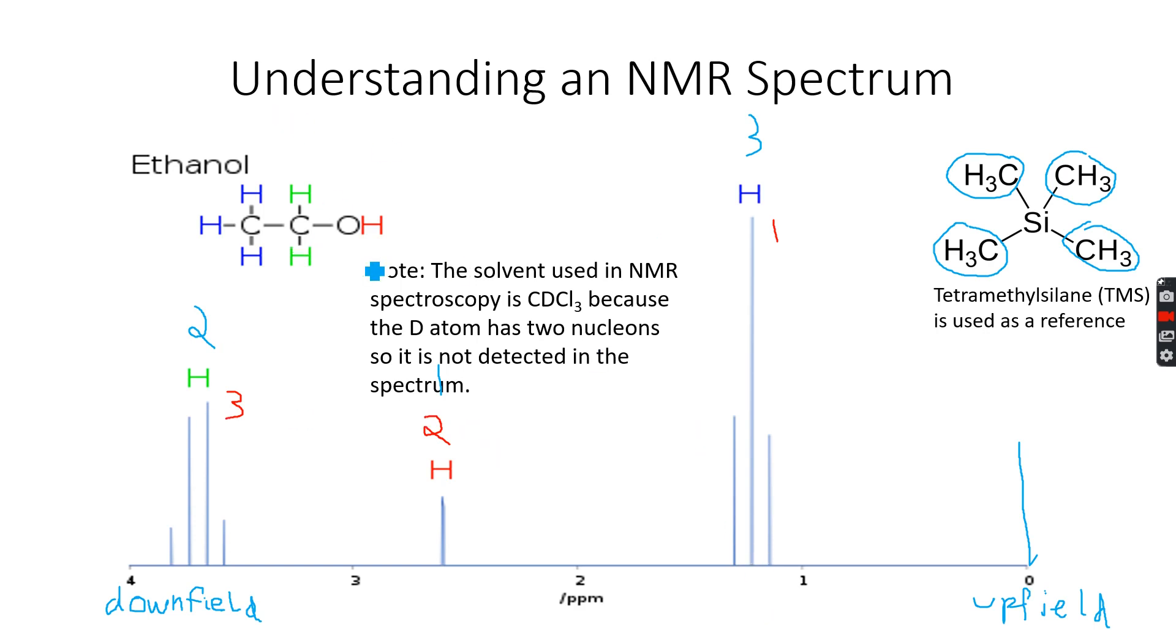Basically if you know trichloromethane, I will make a displayed structure. So we have one carbon atom, one hydrogen, three chlorine atoms.